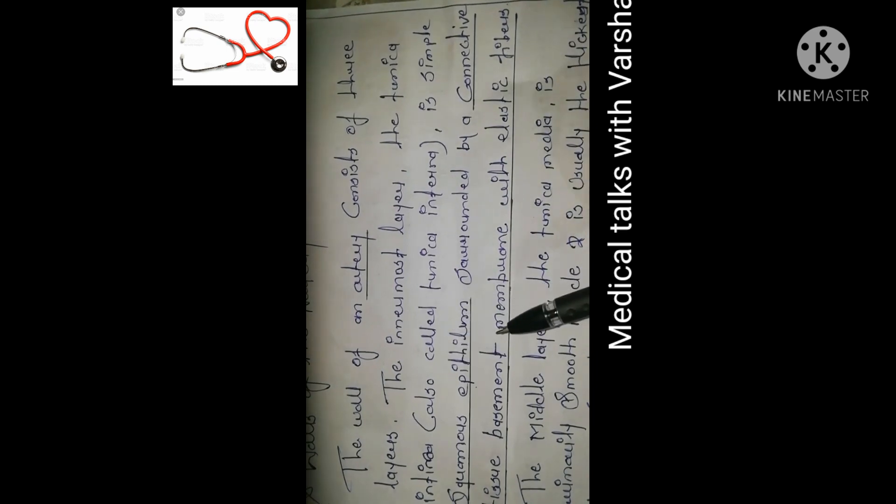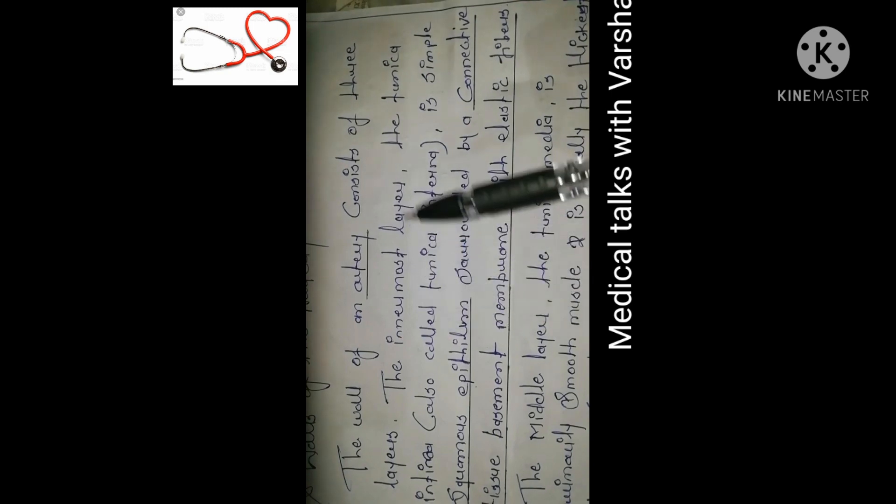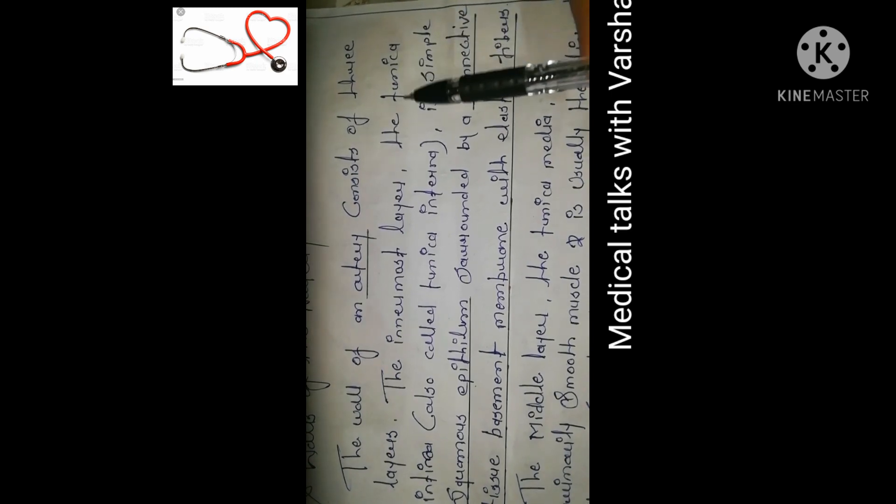So these are the three layers of the arterial wall: the outermost layer is the tunica adventitia, the middle layer is the tunica media, and the innermost layer is the tunica intima.